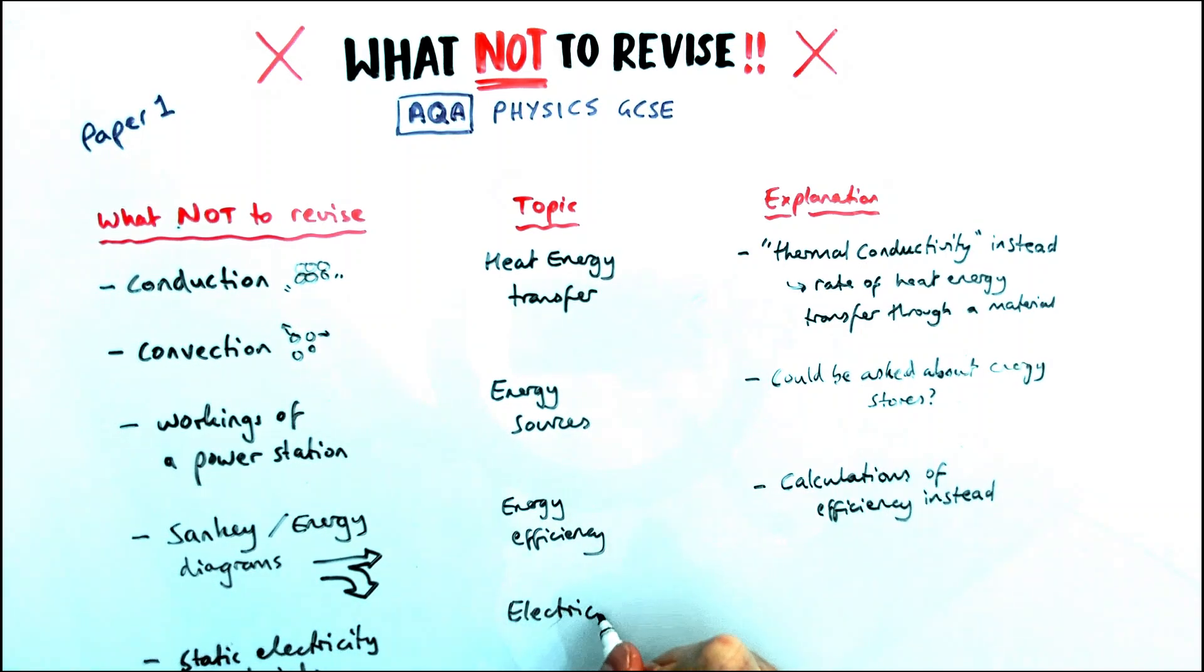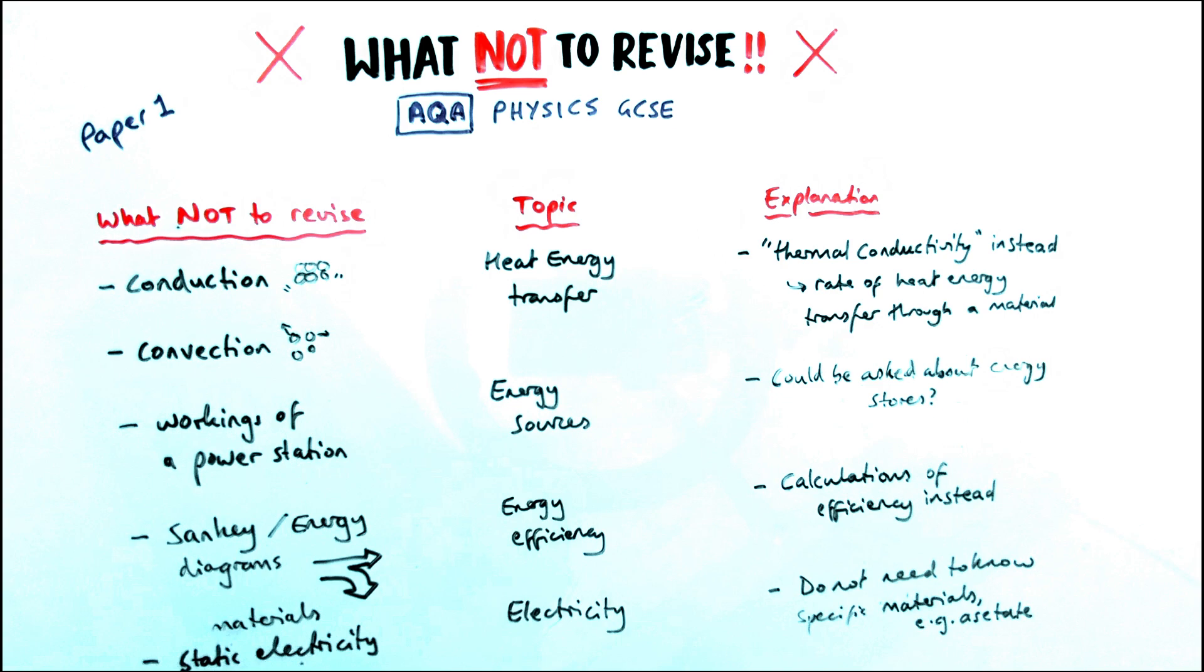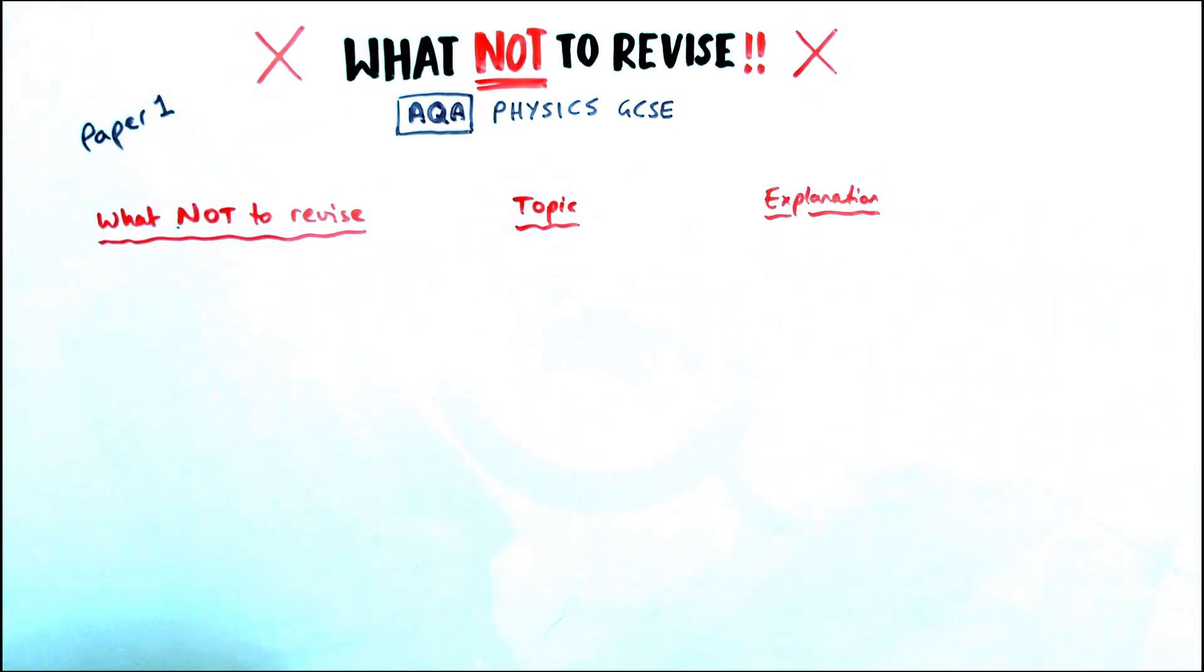Something else you don't need to know about are the specific materials that will transfer electrons to them or away from them when talking about static electricity. Some revision guides or textbooks will talk about acetate and other materials that always accept electrons or transfer electrons away from them. You don't need to know the materials. You do need to know the principle about electrons being transferred, but you're not expected to know what materials that will be from and to, unless it gives you enough information to figure that out from a question.